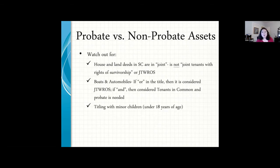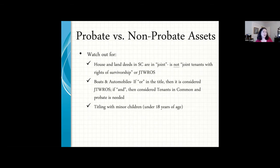Tricky spots include checking your deed to make sure it has rights of survivorship. For boats and automobiles, if the title says 'or' between owners it passes automatically; if it says 'and,' it goes through probate for one half. Double check those, or when you next buy a car consider changing how it's titled at the DMV. Also, any titling involving minor children should be done appropriately under something like the Uniform Gifts to Minors Act account.